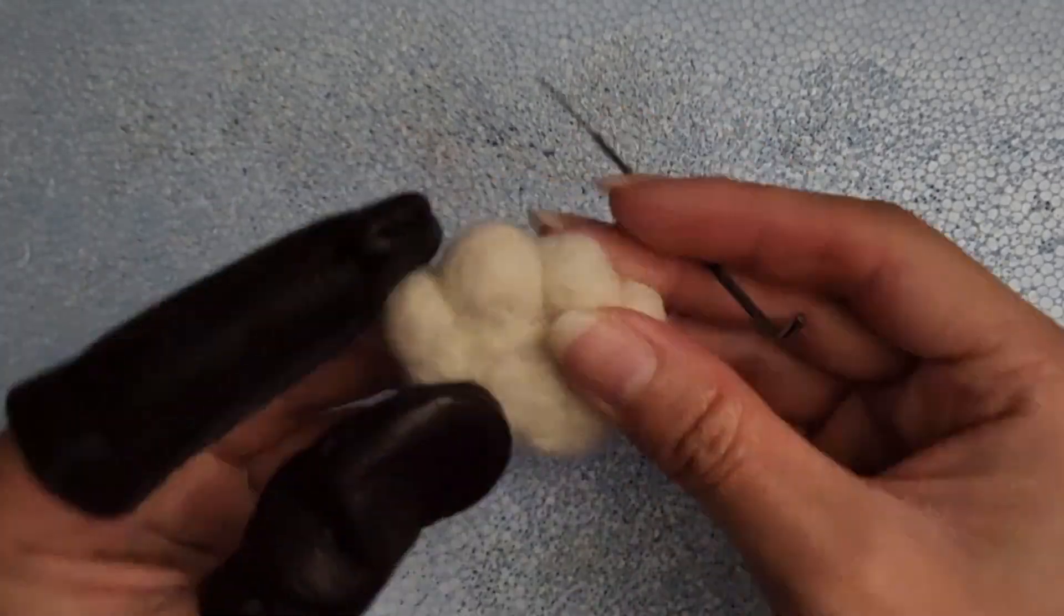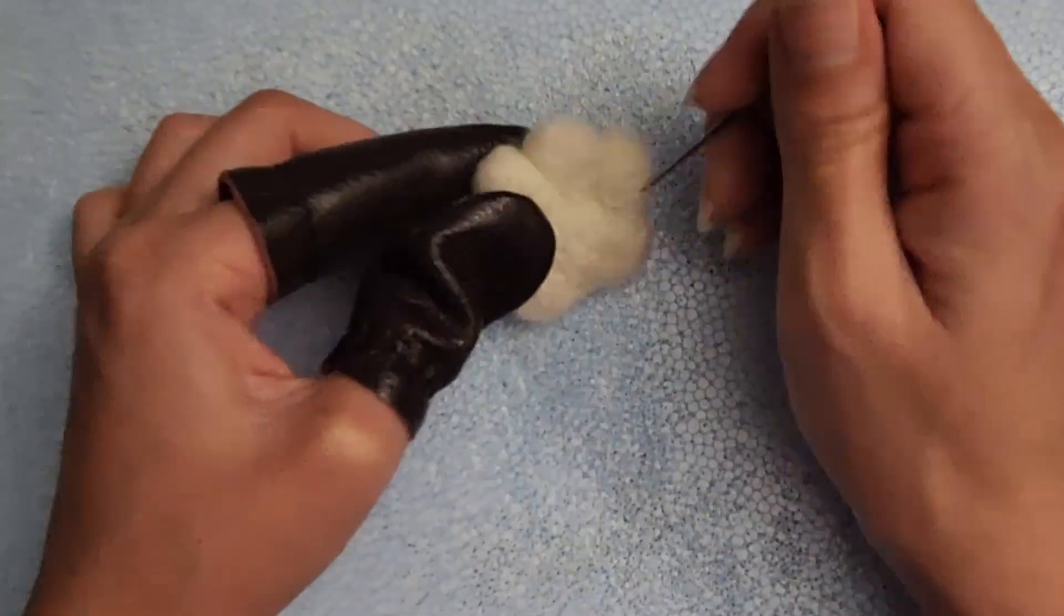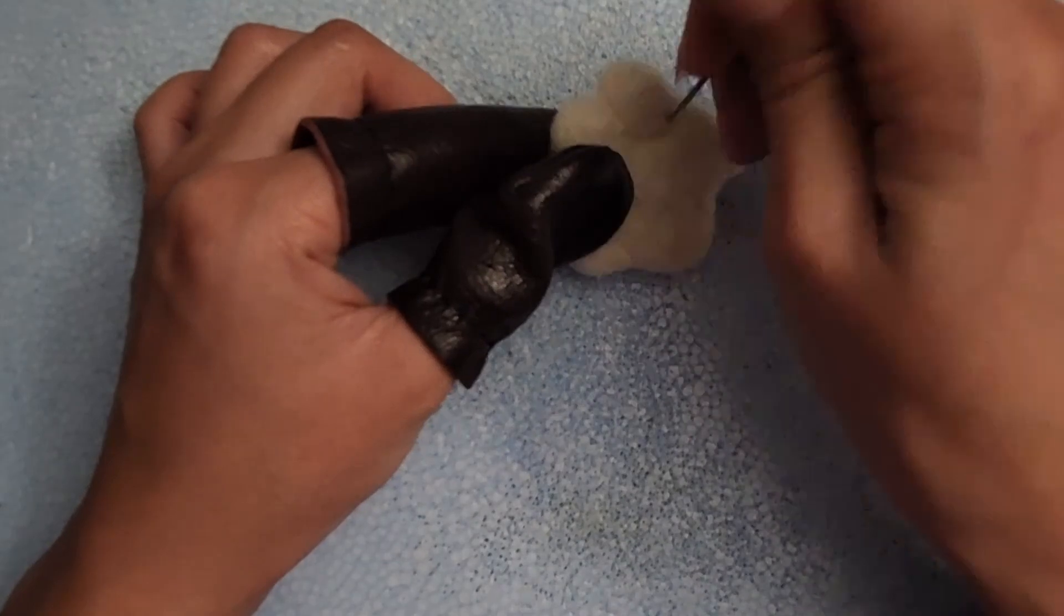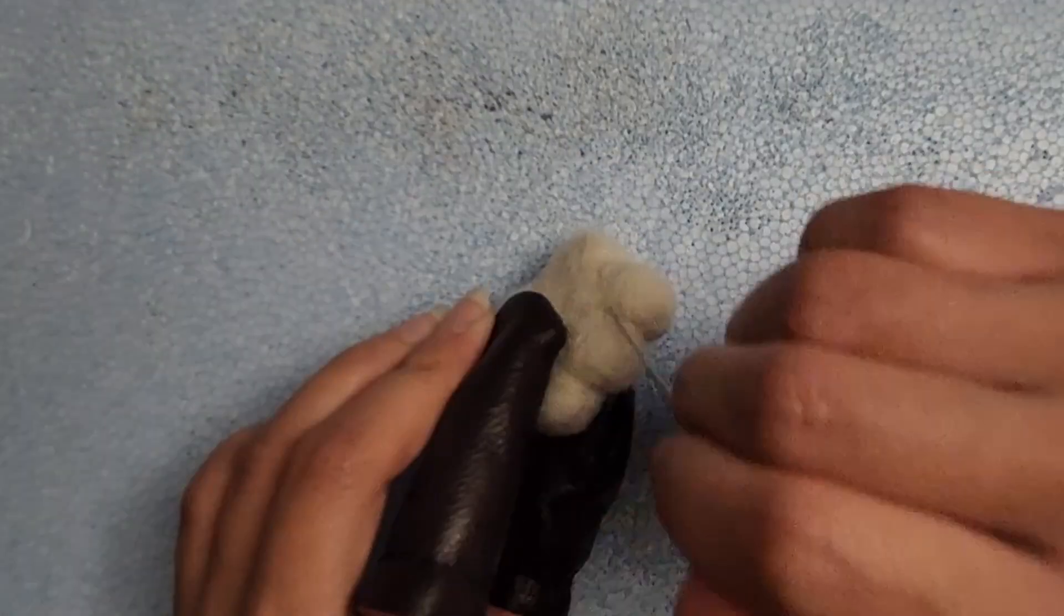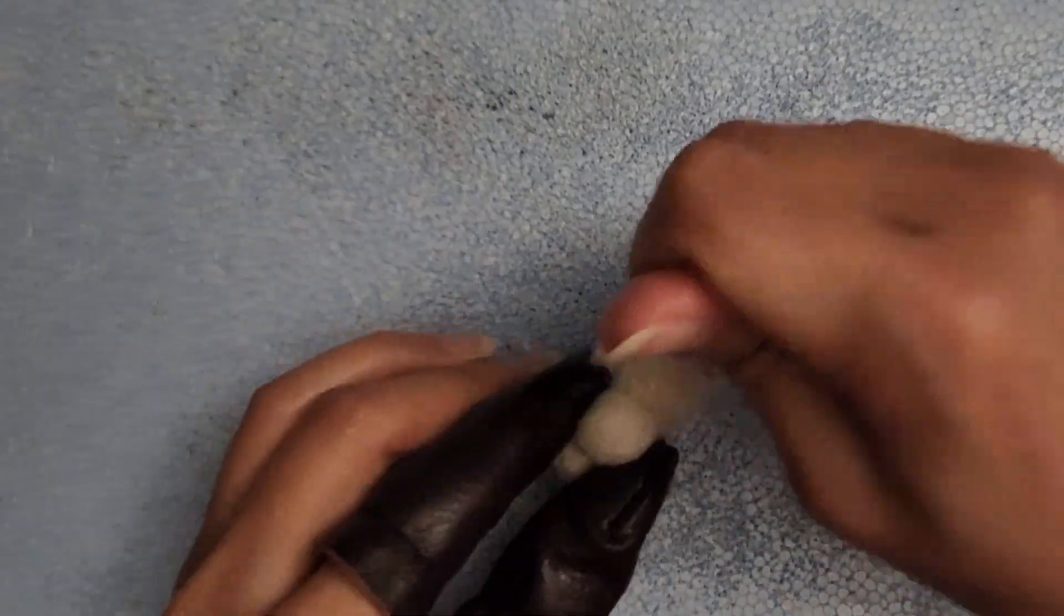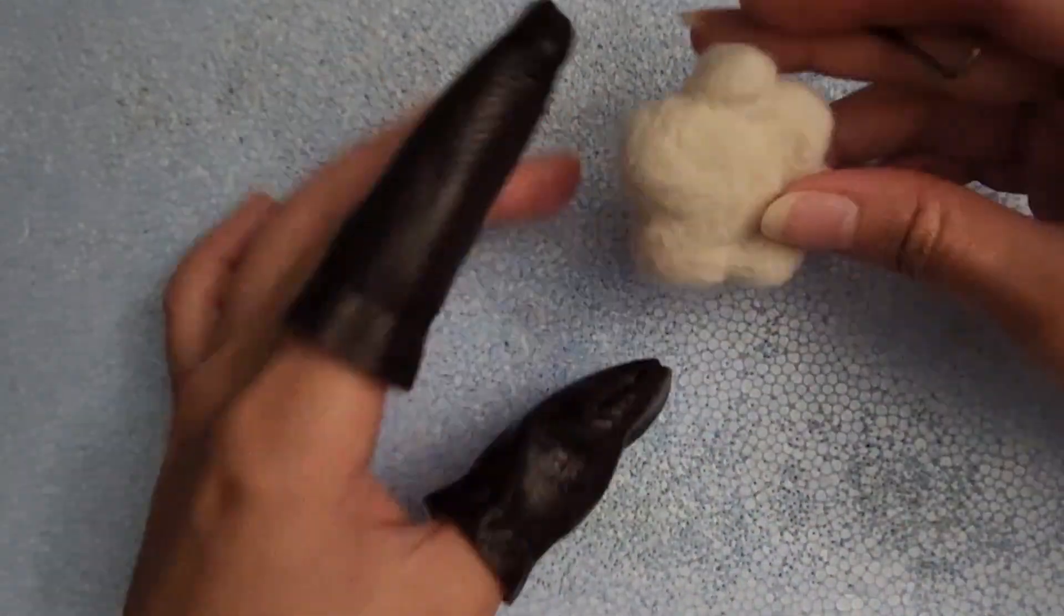As you keep going with the positioning and felting all four parts of the paw, it should look similar to this. Again, don't worry about everything looking perfect because we still have a lot of room to fix it in the next steps as you keep working.